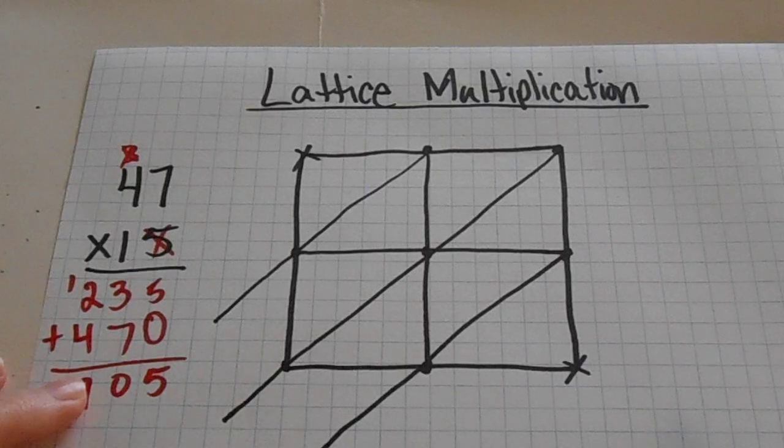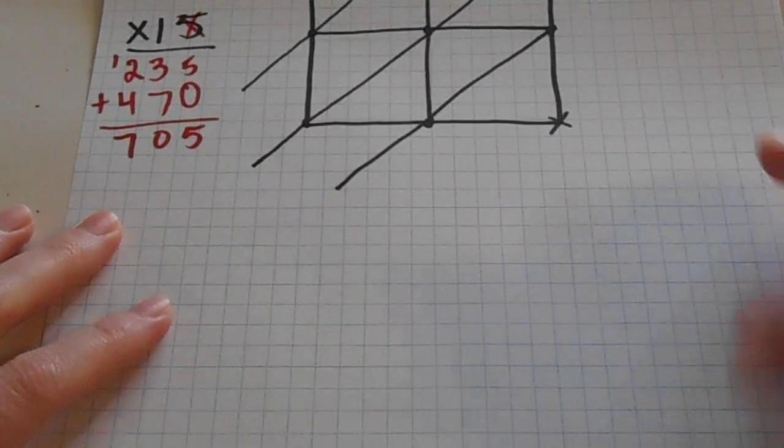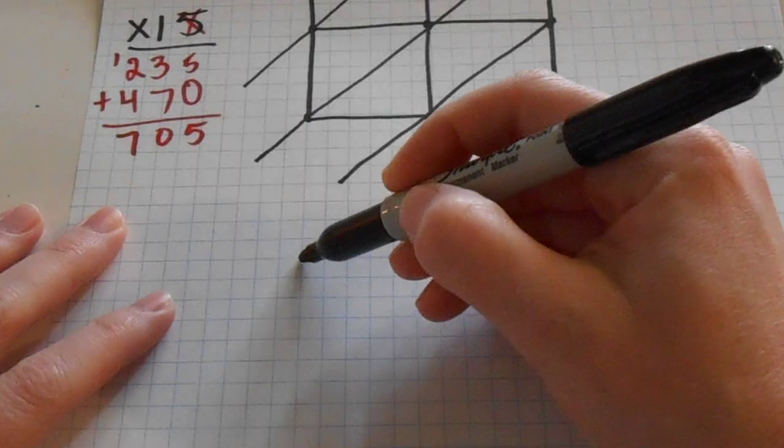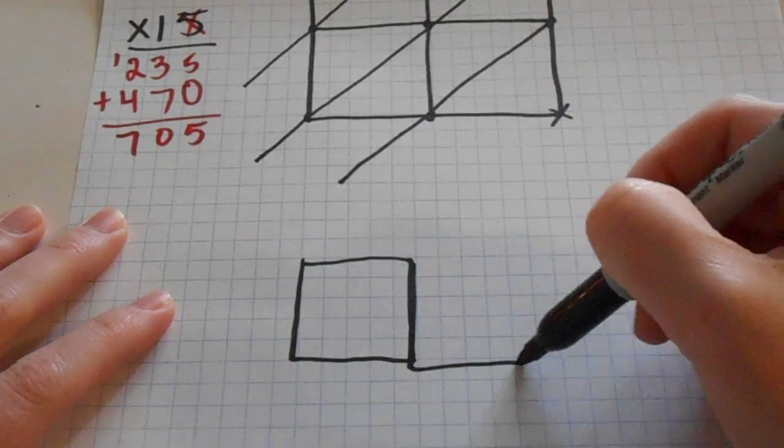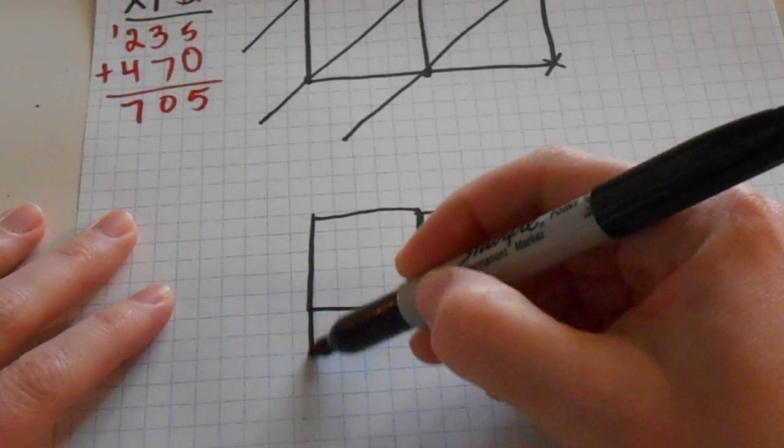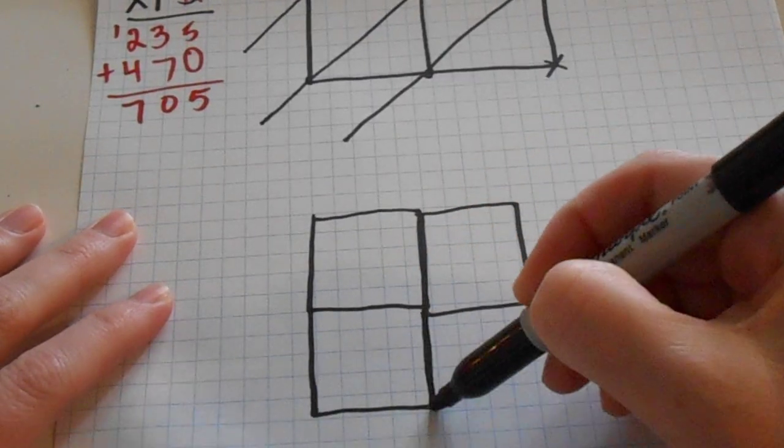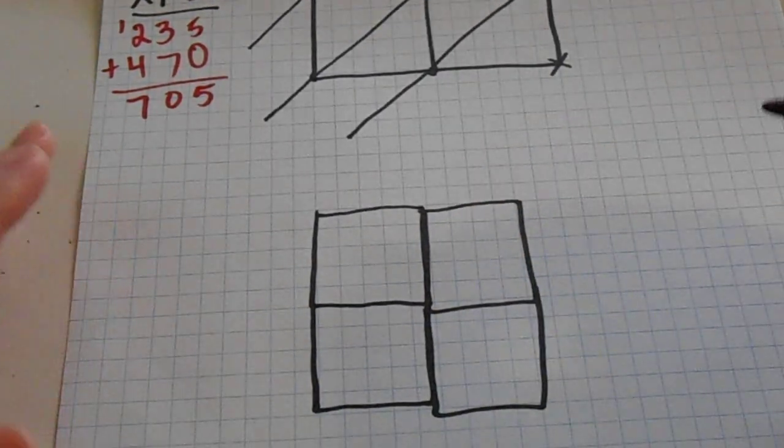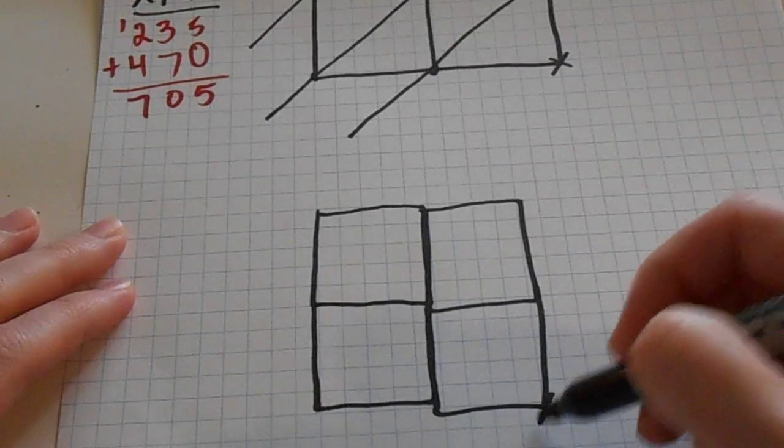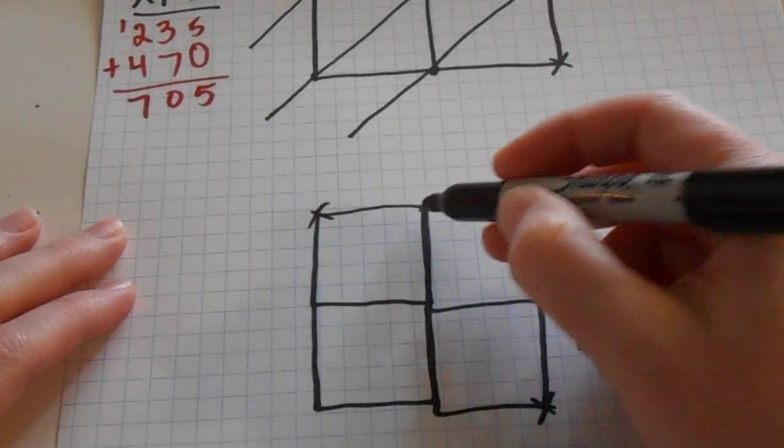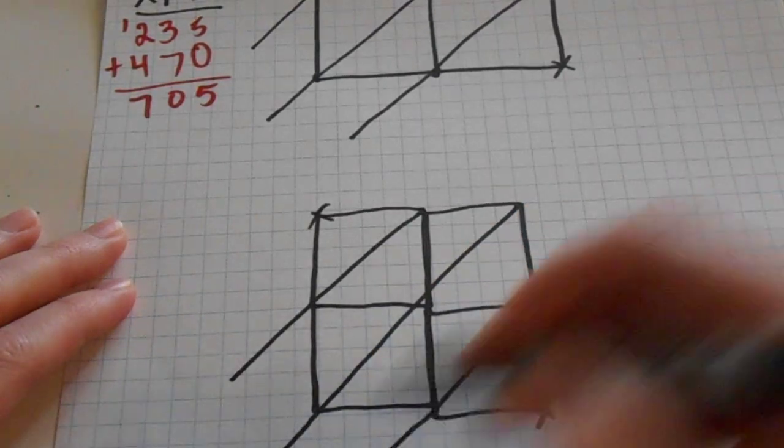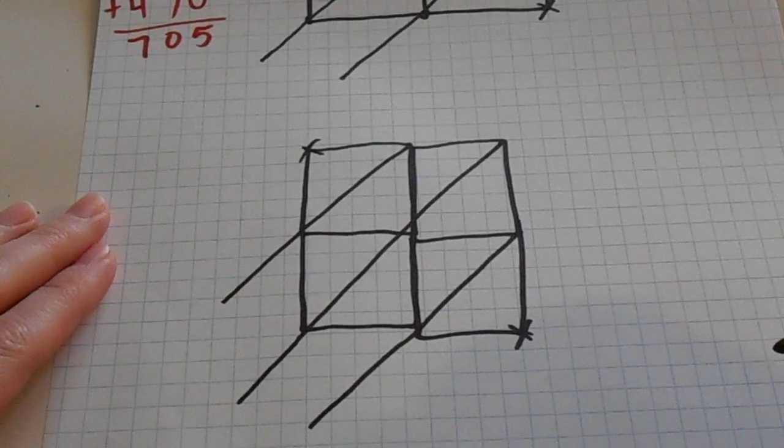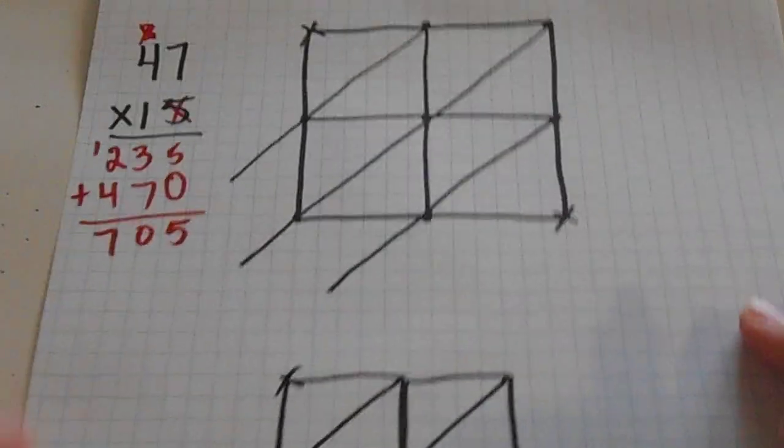And like I said, if it's easier for you, you can just draw separate boxes. So this would be my first box. This would be my second box. Third box. And you can see that that is not exactly perfect but it will still work. Draw your diagonals. And then you have your lattice set up that way. So either way.